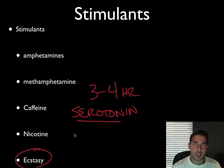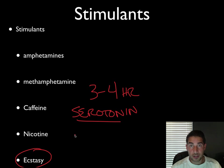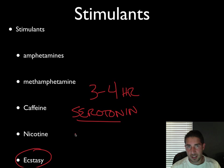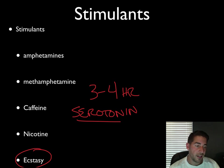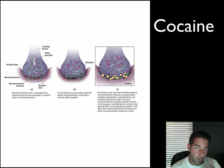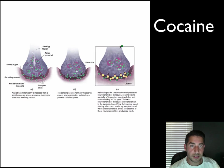If you continue to use ecstasy in large amounts, you can lower your naturally occurring serotonin — which causes depression and lack of feeling good. It also suppresses your immune system and impairs your memory. So there are some serious things to be careful of with ecstasy.